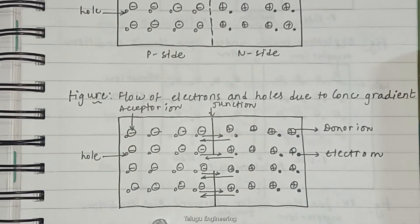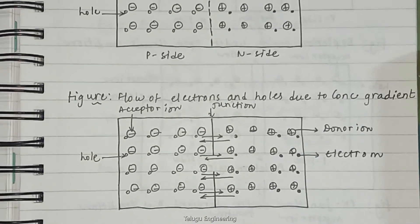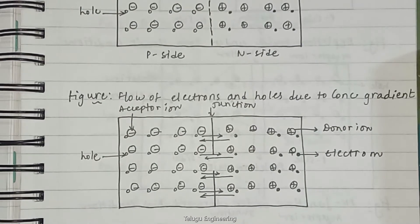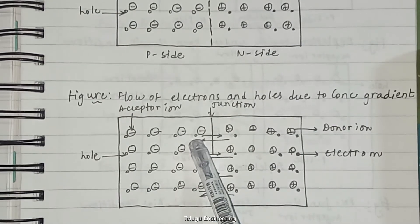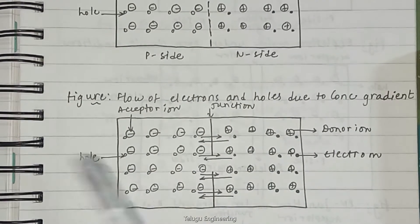Here we have a figure which shows the flow of electrons and holes due to concentration gradient. Therefore, the holes flow from left side to right side and the electrons flow from right side to left side as shown in this figure.